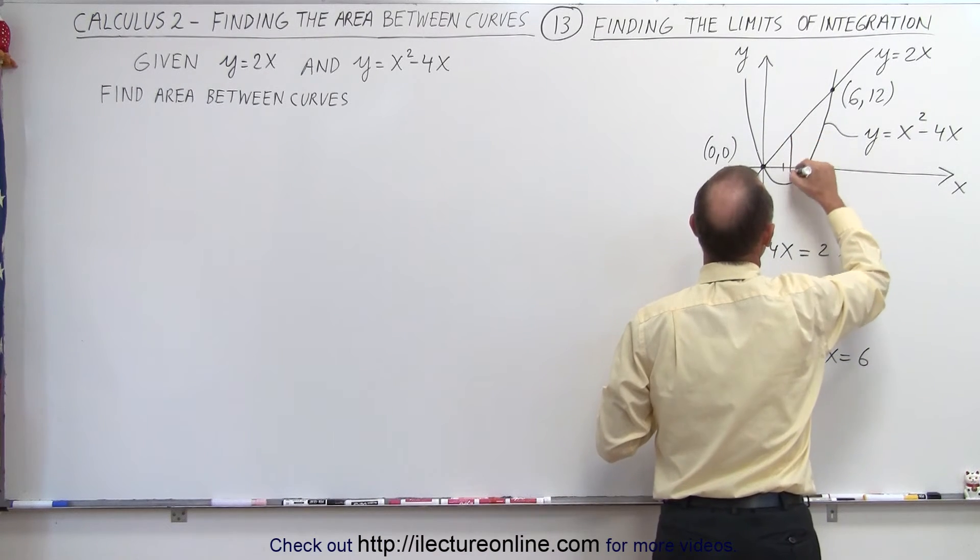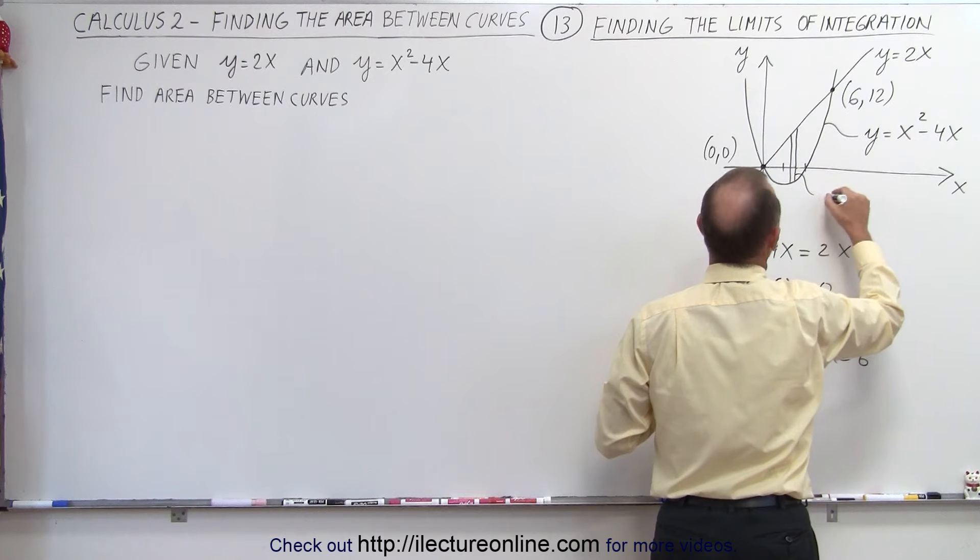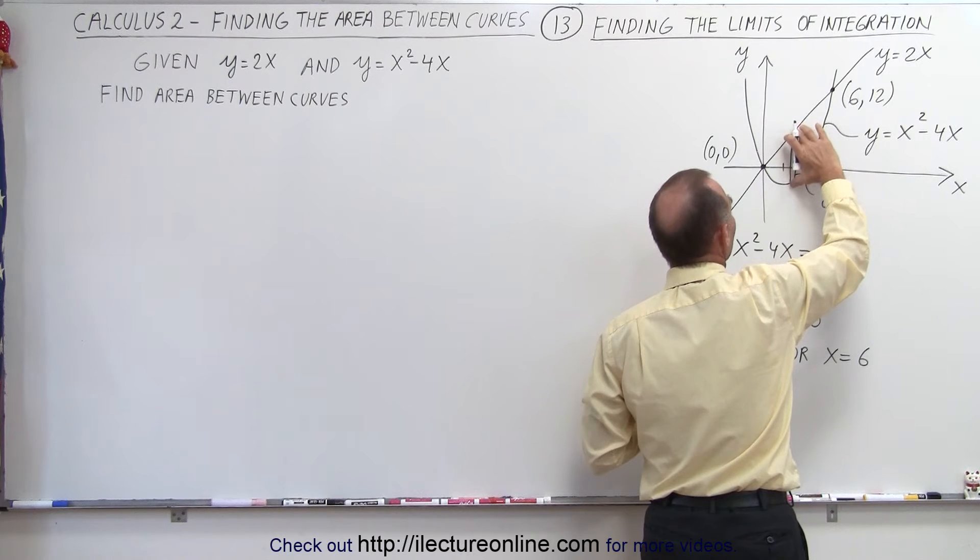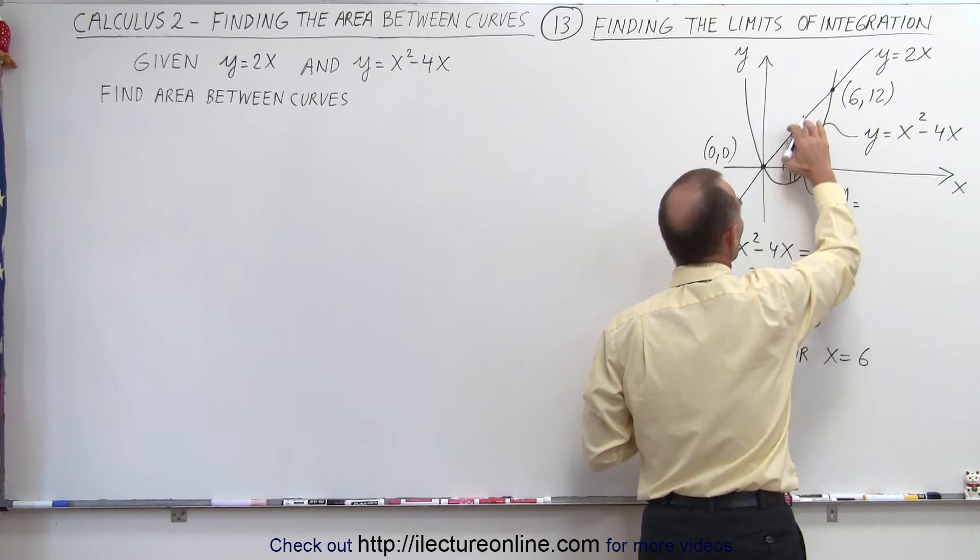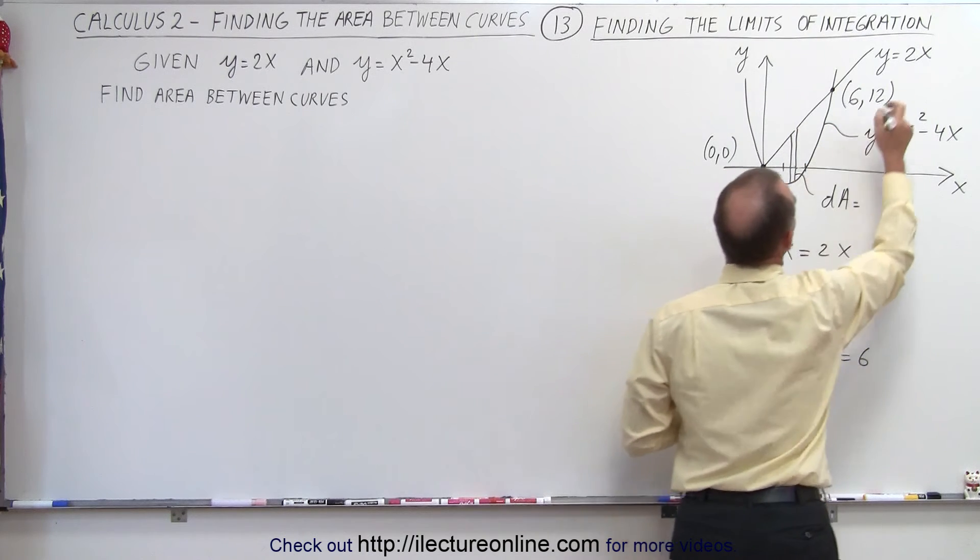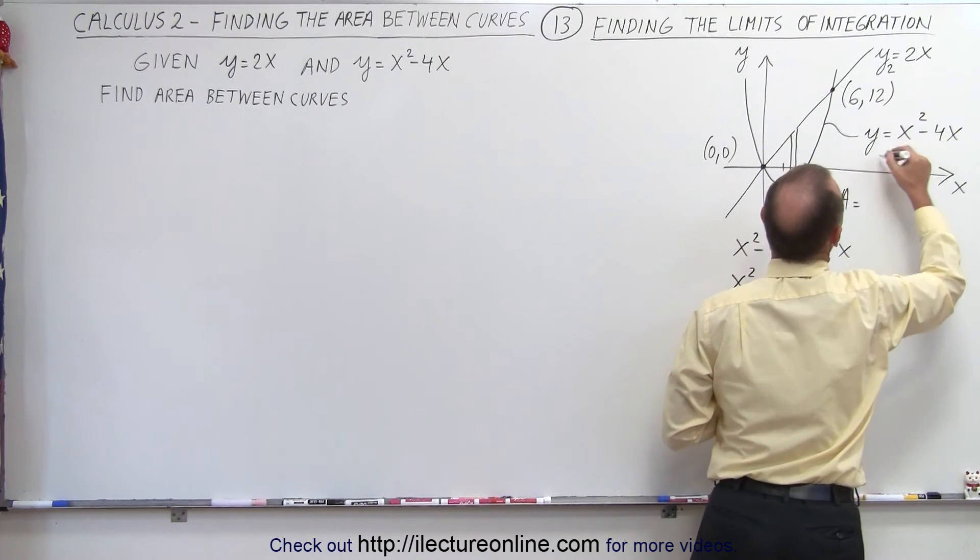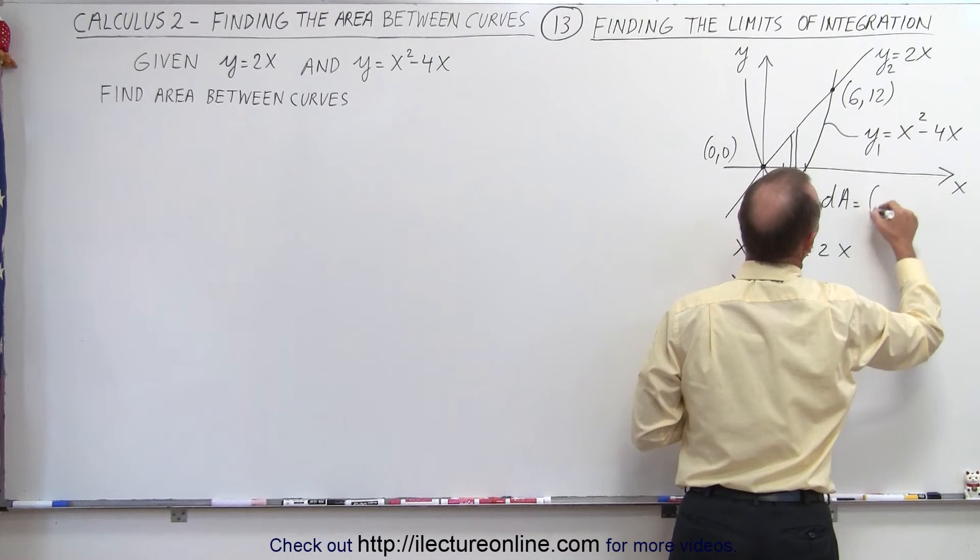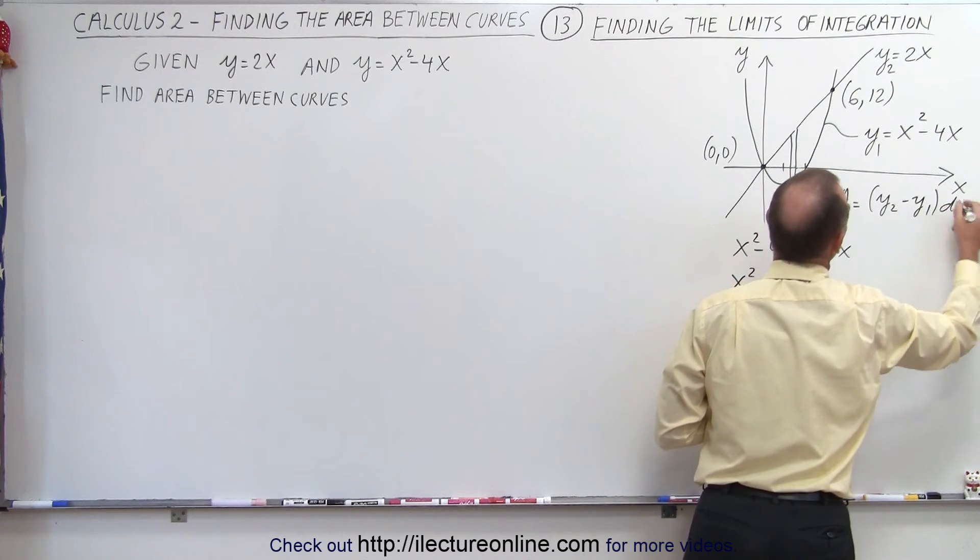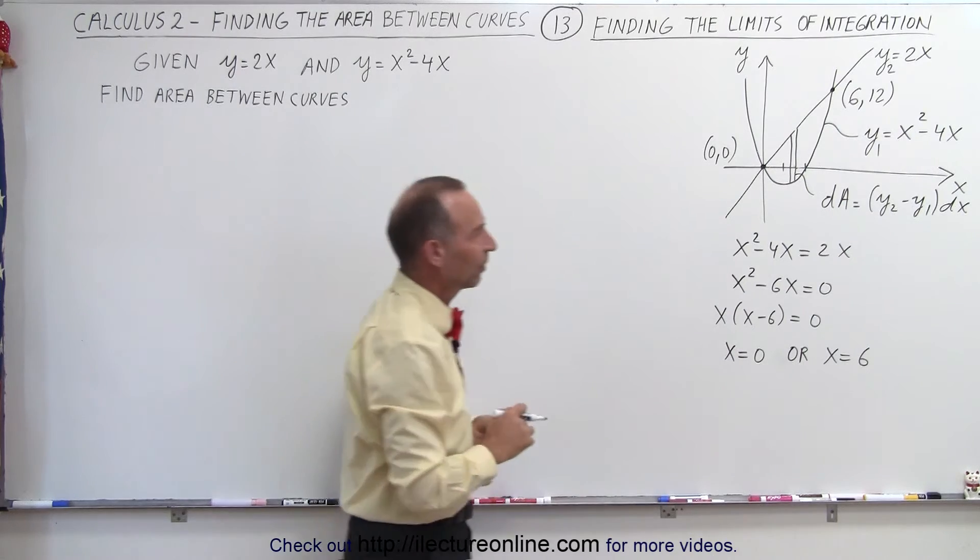So we'll put our dA down like this. Our dA is going to be equal to the difference of the length of the y value, which is the difference of the two curves in the y direction. So we have the upper curve minus the lower curve, so we'll call this y2, we'll call this y1. So this will be equal to y2 minus y1 times the thickness of the dA, which is dx.